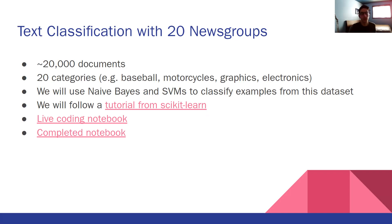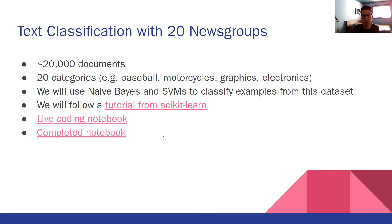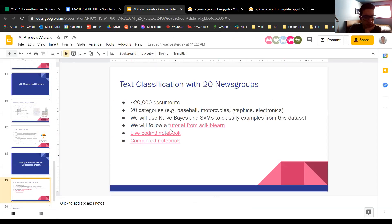We're going to try two different approaches for this: Naive Bayes and support vector machines. I would have loved to use neural networks, but that would take too long to train and we have limited time. So I decided to keep things simple. We're going to be following a tutorial from scikit-learn, and I have two notebooks — one I'll use to code live, and one which contains the completed code.